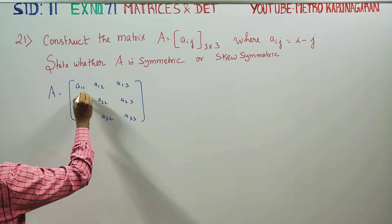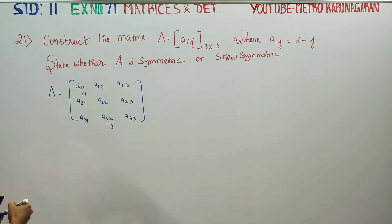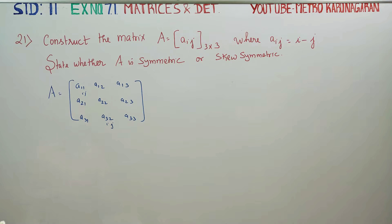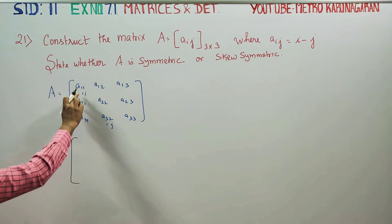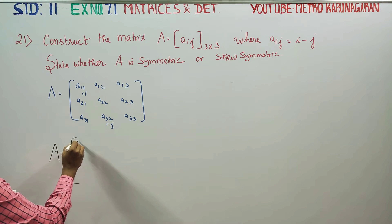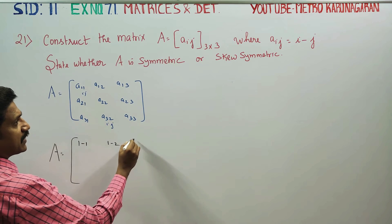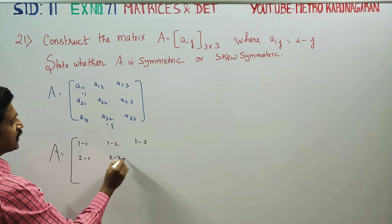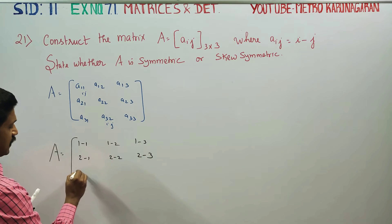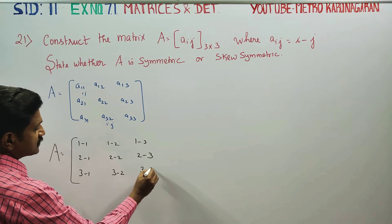This is i and this is j. The formula is aij = i minus j. So A is equal to i-j. Computing elements: 1-1, 1-2, 1-3, 2-1, 2-2, 2-3, 3-1, 3-2, 3-3.